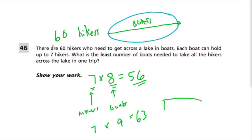Now, that means there will be 8 boats that are full with 7 people, and then the last boat will only have 4 people on it: 1, 2, 3, 4.